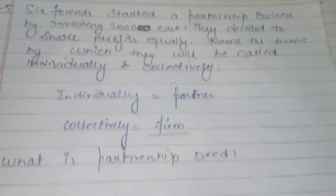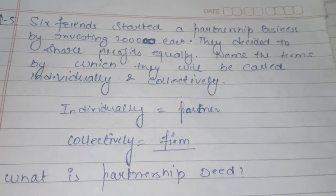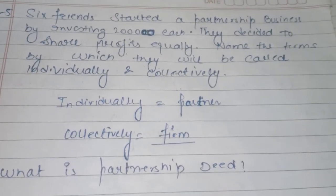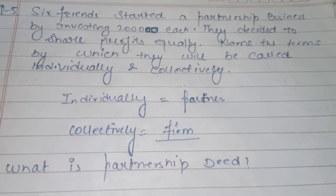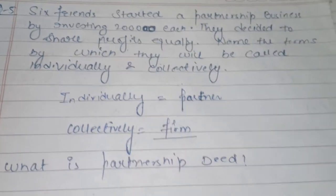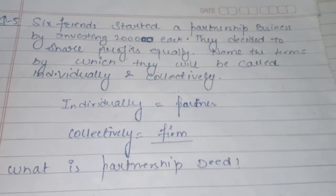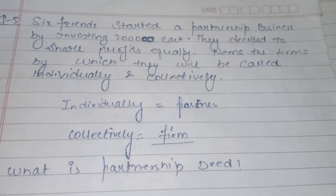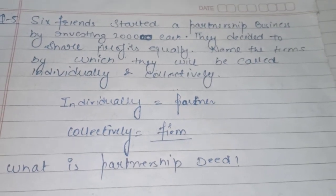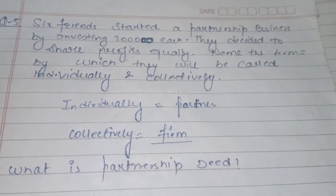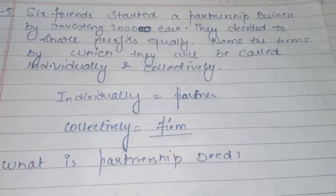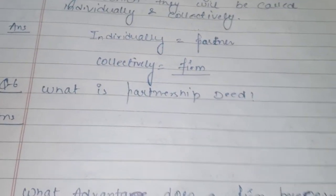So individually, each person will be called by the name of partner — for example, Ram and Sham are partners. But when Ram and Sham come together, that combination is the firm. So the six friends started a business: individually they will be called the partners, and collectively they will be called the firm. Now, what is a partnership deed?